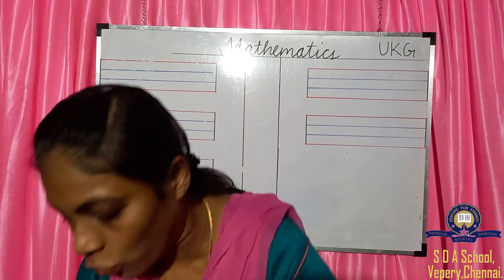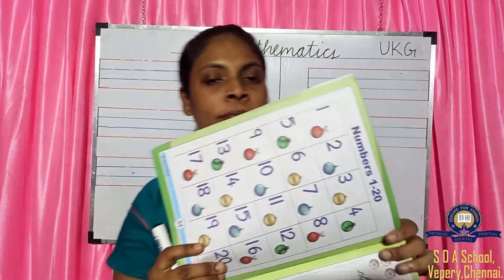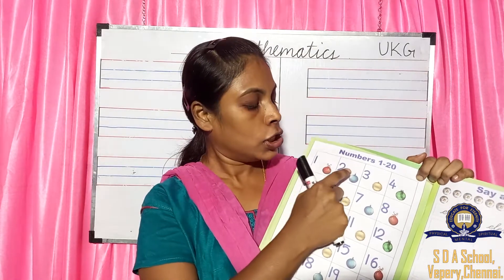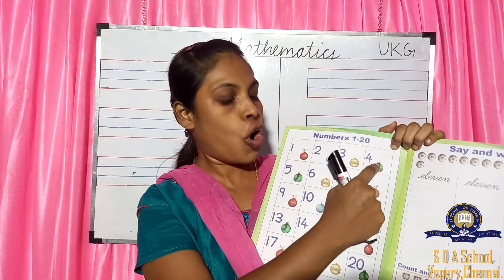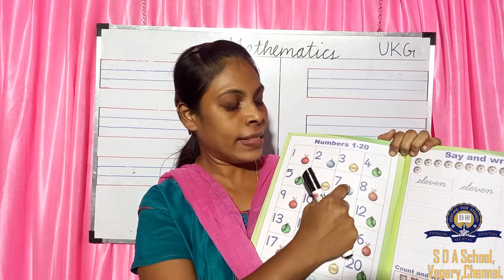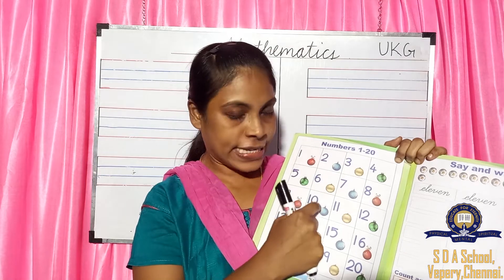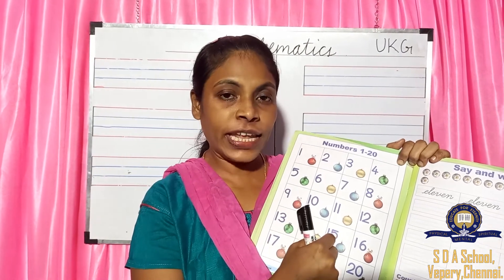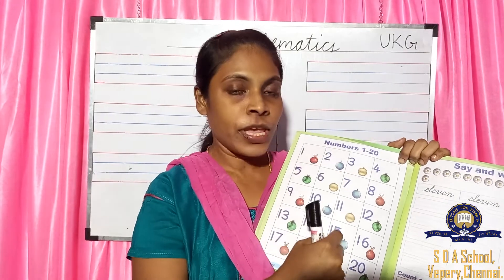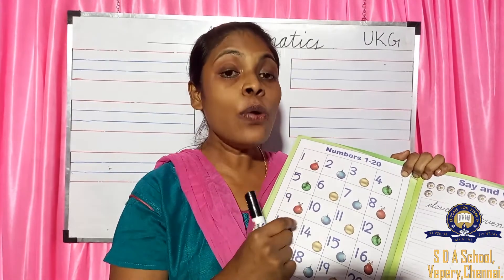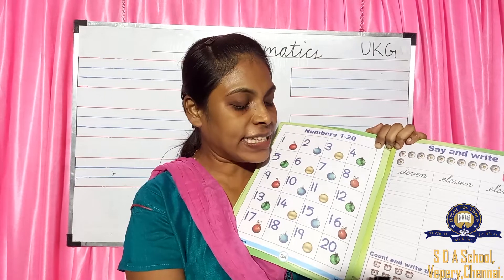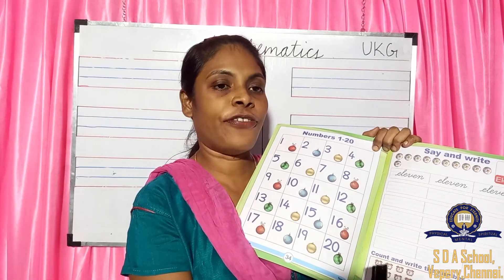Now all take your book. We are going to revise these numbers once: 1, 2, 3, 4, 5, 6, 7, 8, 9, 10, 11, 12, 13, 14, 15. From 1 to 15 we are going to learn. Now we are going to write in the book. All take your book, page number 35.